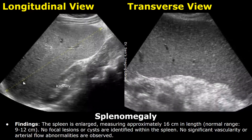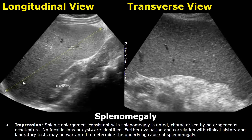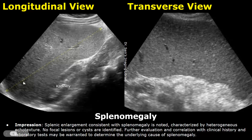Here is a case of splenomegaly. In the findings, you must mention that the spleen is enlarged and write its size. Here is the impression: splenic enlargement consistent with splenomegaly is noted, characterized by heterogeneous echo texture. There were no focal lesions or cysts in this example. Further evaluation and correlation with clinical history and lab tests may be warranted to determine the underlying cause of splenomegaly.